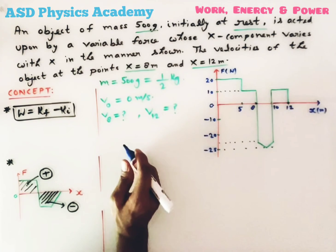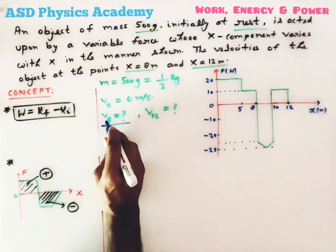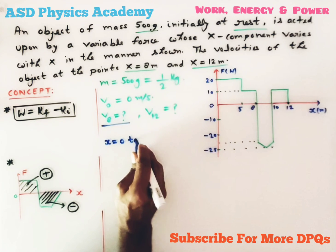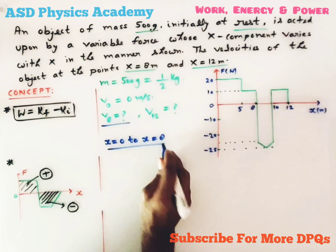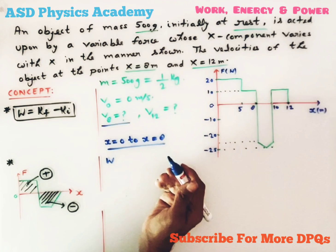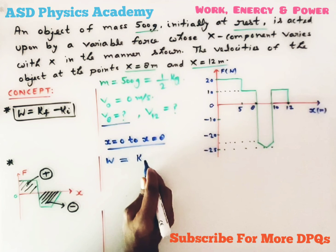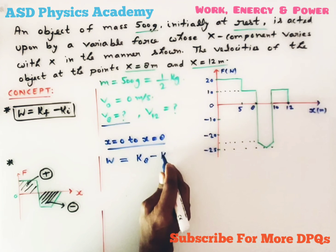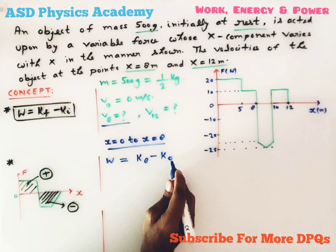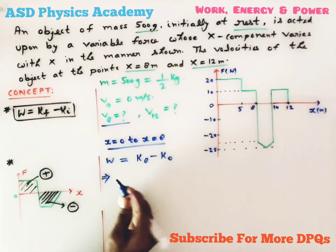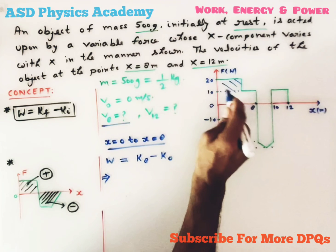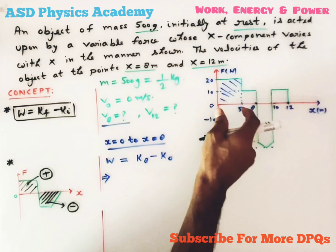In our question, we first find the velocity at x equal to 8 meters by applying the Work-Kinetic Energy Theorem from x equal to 0 to x equal to 8 meters. So work done W equals change in kinetic energy, which is k8 minus k0 — kinetic energy at x equal to 8 minus kinetic energy at x equal to 0. Now let's calculate the work done by looking at this curve.